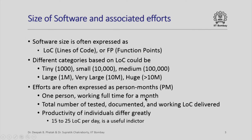For measuring productivity, we are talking about the total number of tested, documented and working lines of code — it involves a huge lot of effort. While the productivity of individuals differs greatly, it is considered adequate if a professional programmer can produce 15 to 25 lines of code per day. Many of you think this is very small productivity, but it is not, if you consider that every line of code is part of a piece of software that is completely tested, documented and working perfectly.